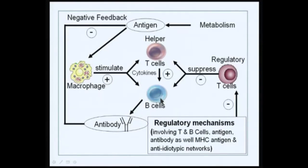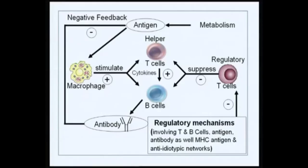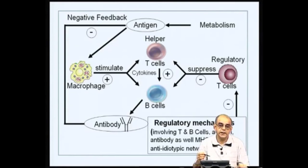As opposed to stimulation, the immune system also has various regulatory pathways. Antigen stimulation and antibodies, through complex processes, can feedback-regulate stimulation of the immune system in the event it gets overstimulated beyond what is required for an optimal immune response. These regulatory mechanisms include the generation or differentiation of regulatory T cells, which will be dealt with in future classes.